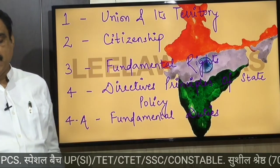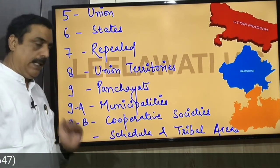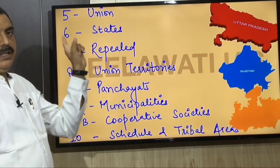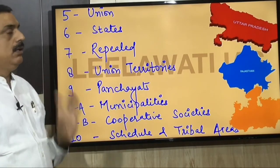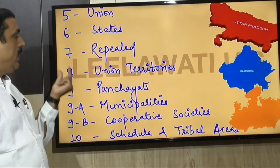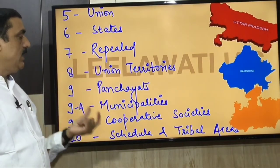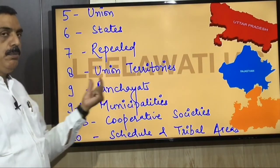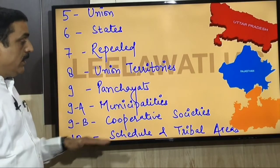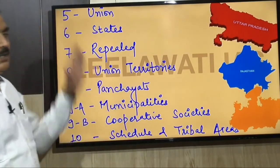The second segment covers Part 5 to Part 10. Again using the father-son story: Part 5 is father, Part 6 is son, Part 7 is repealed. Part 8 is Union Territories (UTIs). Part 9 is Panchayats — 9 panchayats — with 9A municipalities and 9B cooperative societies. Part 10 is Scheduled and Tribal Areas.